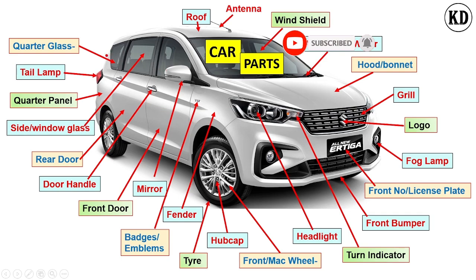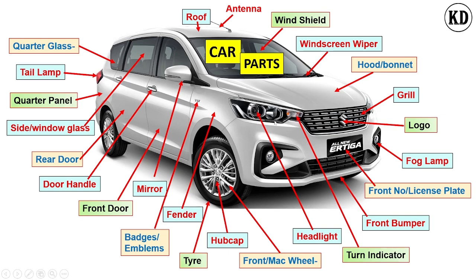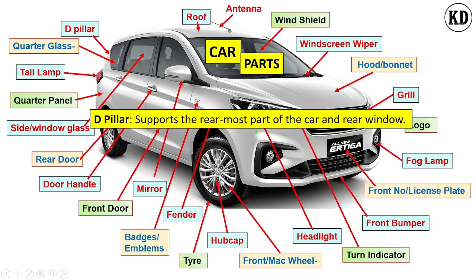The next component is the quarter glass. The function of the quarter glass is to give more visibility to the rear passenger as well as protect from external elements. The next component name is the D pillar, and its function is to support the rearmost part of the car and the rear window.